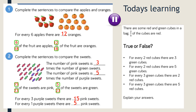There are red and green cubes in a bag. Two fifths of the cubes are red, so three fifths must be green. For every two red cubes there are three green cubes — that is true. For every two red cubes there are five green cubes — false, we said three. For every three green cubes there are two red cubes — true, it's the same relationship with green first. For every three green cubes there are five red cubes — false. Well done if you got those and can explain your answers.